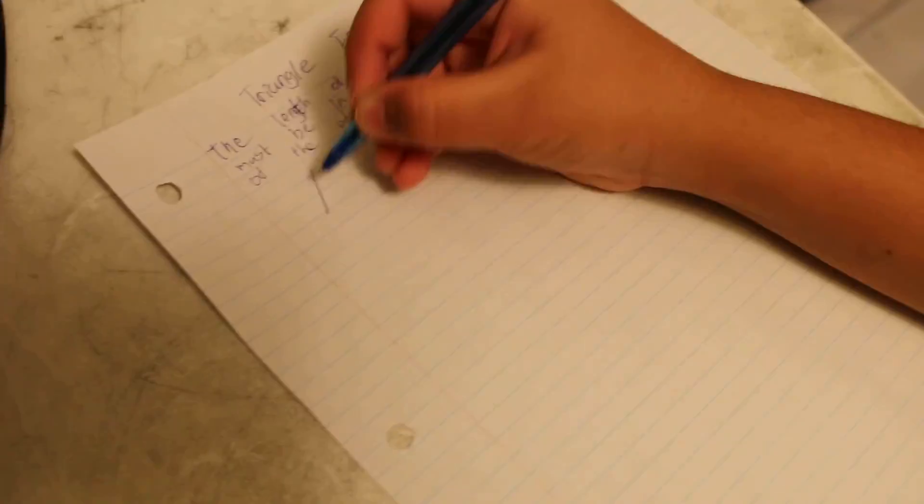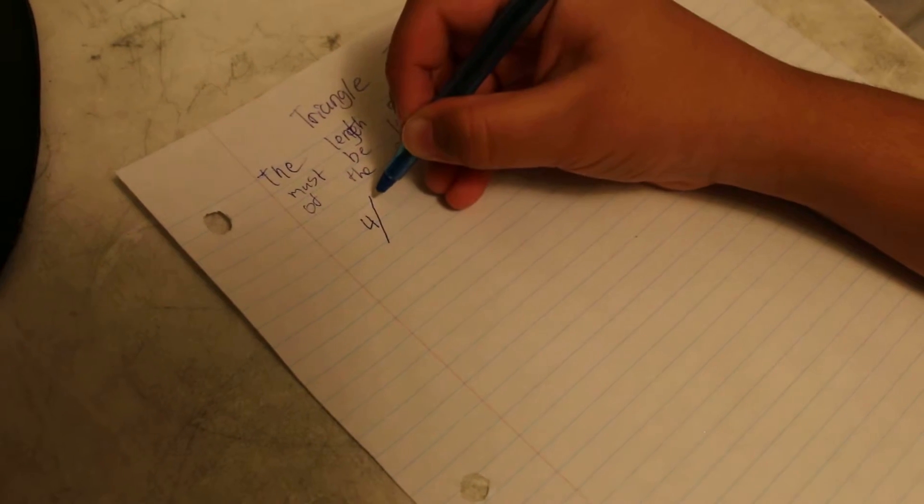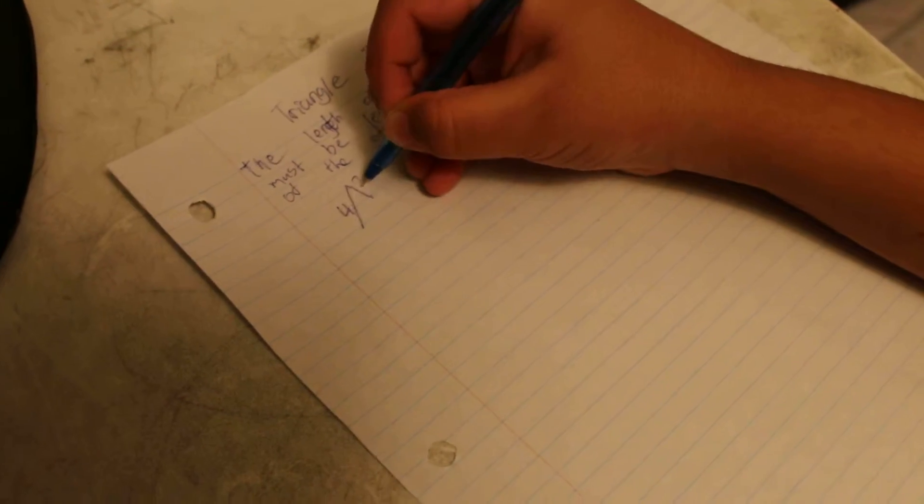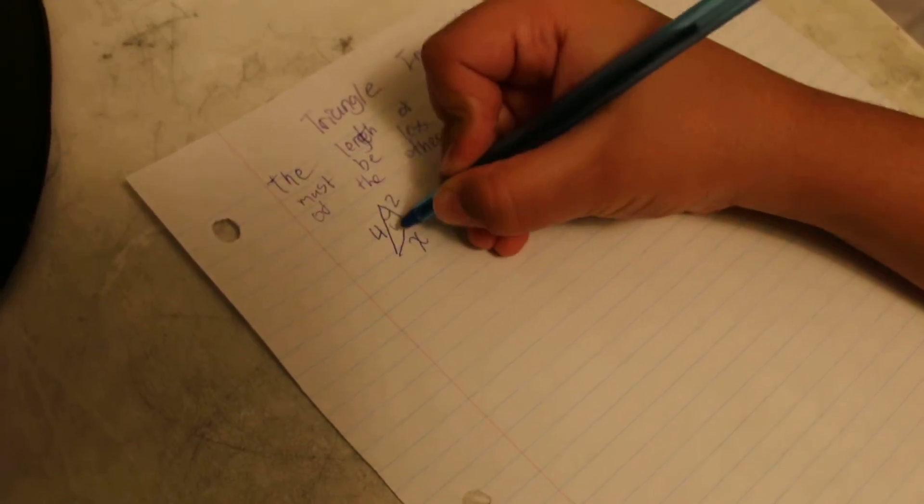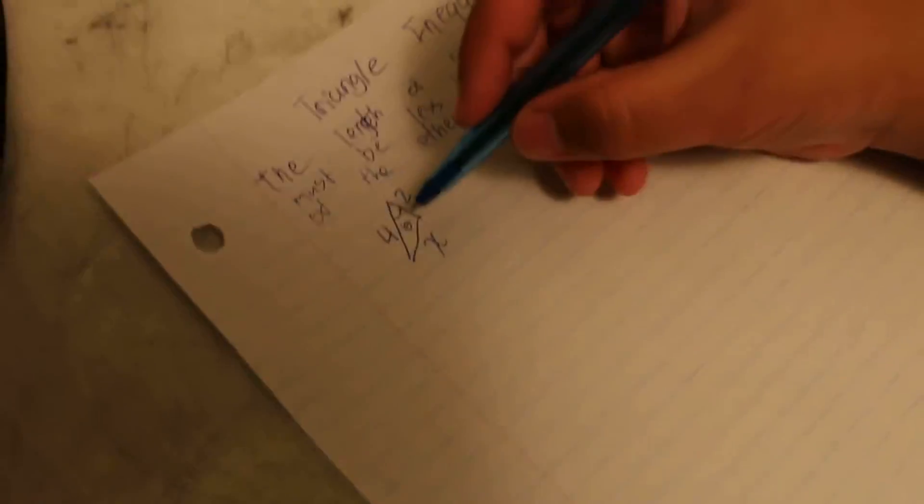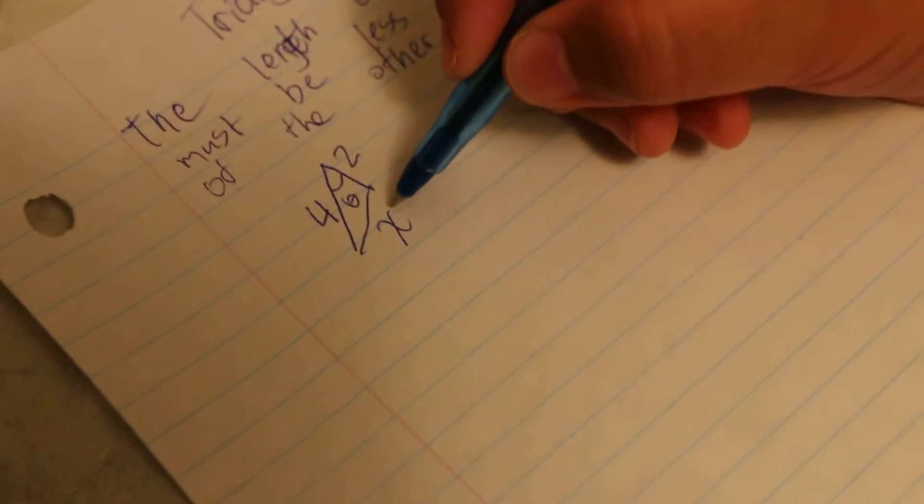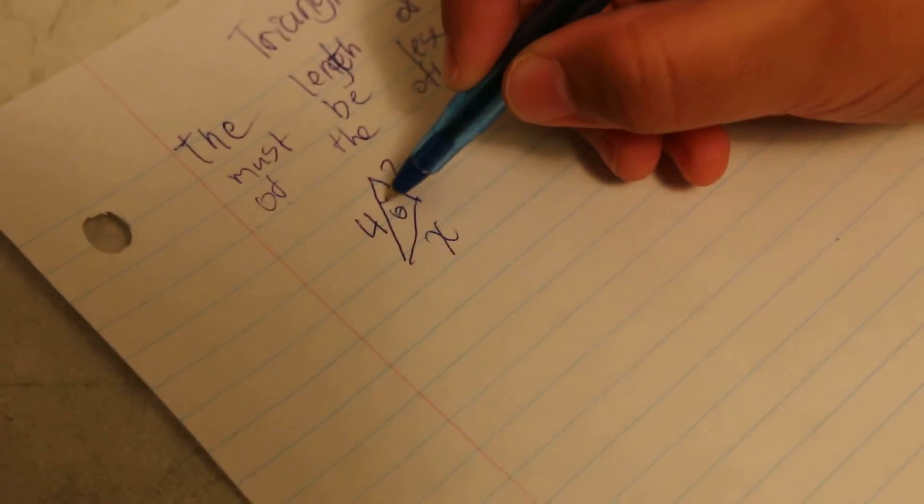So let's say we have a triangle with one side length 4, one side length 2, and one side length x, and we have this angle theta. So if we want to make x as small as possible, we need to make theta as small as possible.